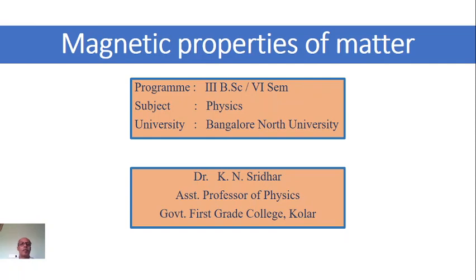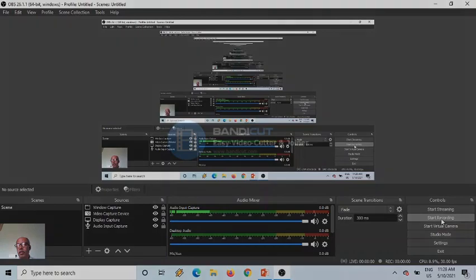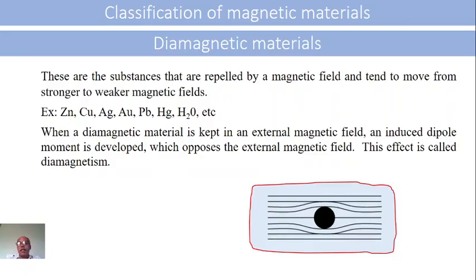Good morning. Classification of Magnetic Materials. Magnetic materials are classified into three different categories: diamagnetic materials, paramagnetic materials, and ferromagnetic materials. We are studying one by one in detail.